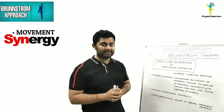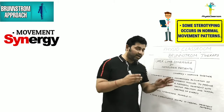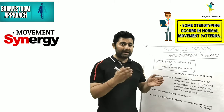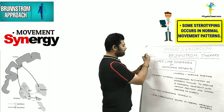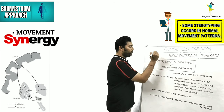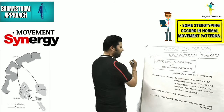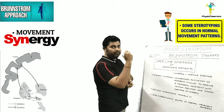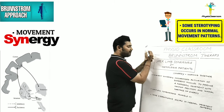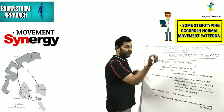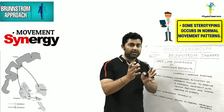Before moving on to upper limb synergies in hemiplegic patients, let's discuss one last interesting thing about normal movement synergy: some stereotyping does occur in normal movement patterns. Take the example of writing — we need wrist extension and radial deviation to perform this activity. Although I can modify my shoulder and elbow position, I still need co-activation of wrist extension, radial deviation, and finger flexion, which indicates that some stereotyping exists even in normal movement patterns.